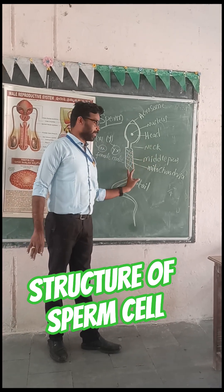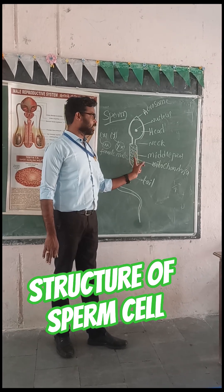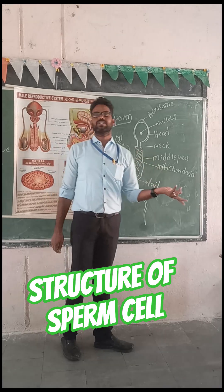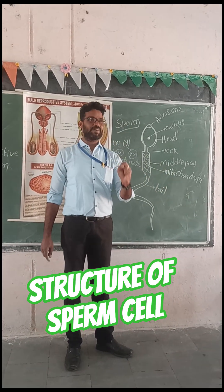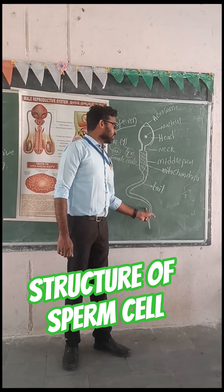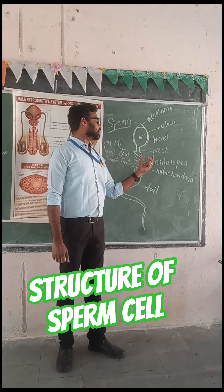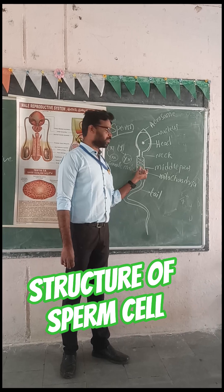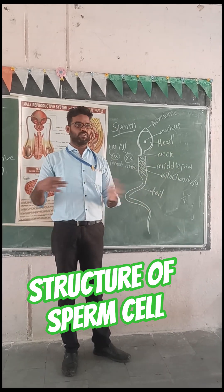The next part is the middle piece. It is the major, main part. Why? Because it contains a number of mitochondria. The function of mitochondria is the generation of power. In the sperm cell, the mitochondria provide energy for the sperm movement. A number of mitochondria are present in the middle piece, and they produce energy used by the sperm cell for their movement.